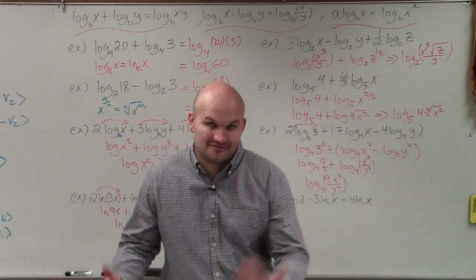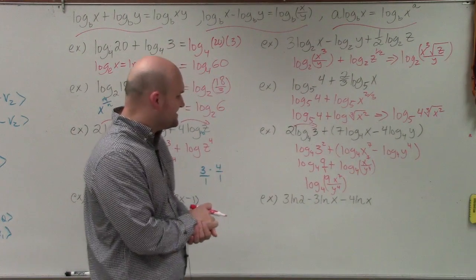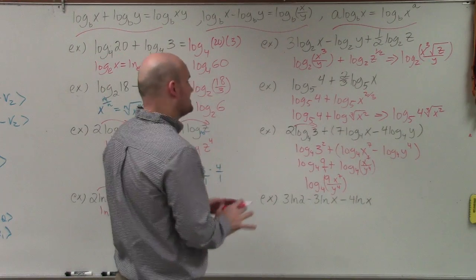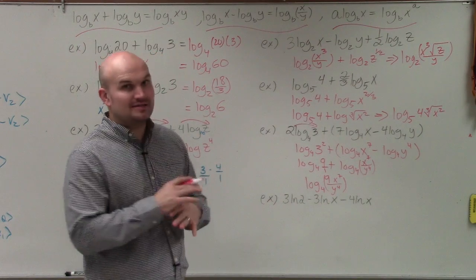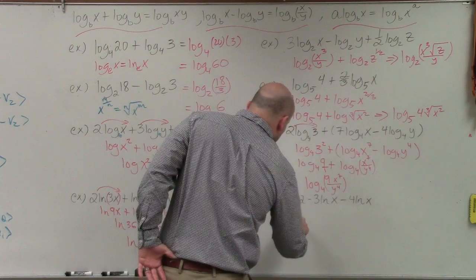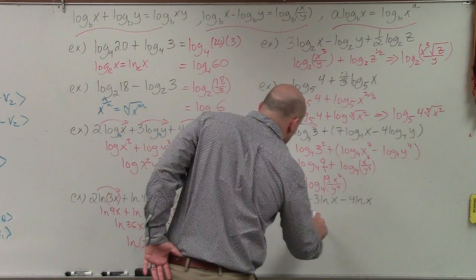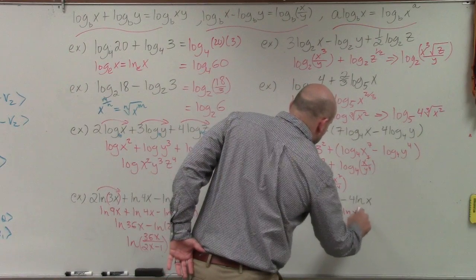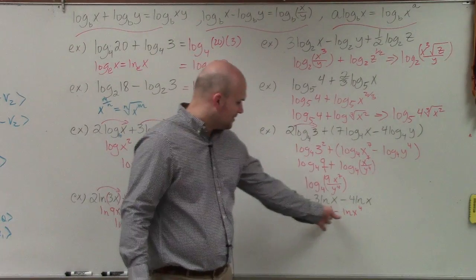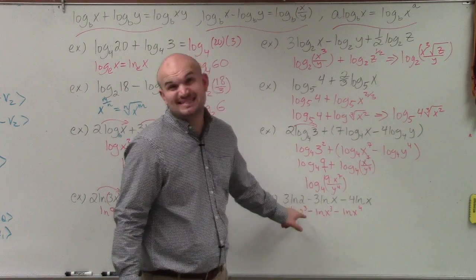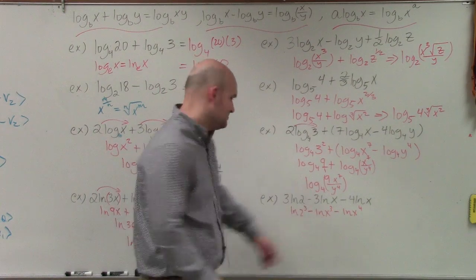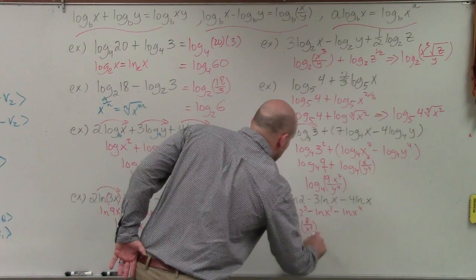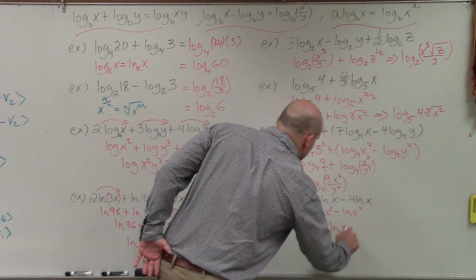The last one involves division and division — great practice. Work from left to right, but first rewrite as powers: ln of 2 cubed minus ln of x cubed minus ln of x to the 4th. Working left to right, divide the first two: 2 cubed is 8, so that's 8 divided by x cubed. I now have ln of 8 divided by x cubed, minus ln of x to the 4th.